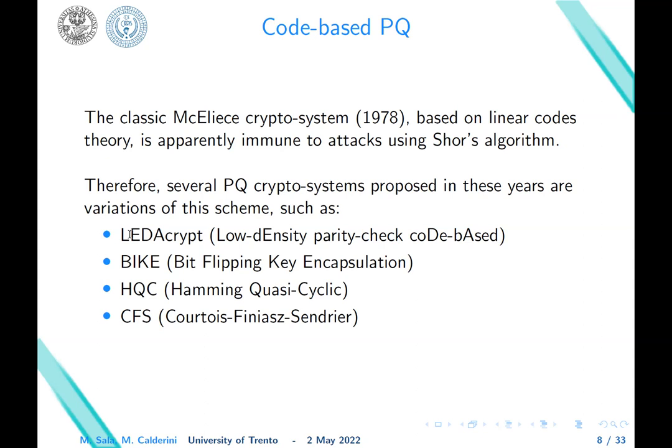The classic McEliece crypto system from 1978 is based on linear codes and is apparently immune to attacks using the Shor algorithm. Therefore, several PQ cryptosystems proposed in these years are actually variations of this scheme, such as LEDAcrypt, low-density parity check code based; BIKE, bit-flipping key encapsulation; HQC, Hamming Quasi-Cyclic; and CFS, Courtois, Finiasz, Sendrier.